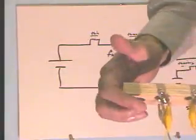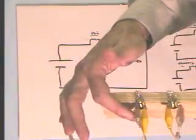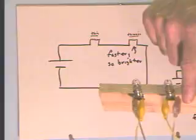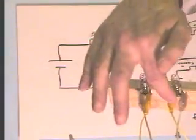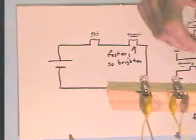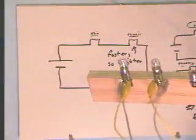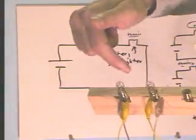Here we have the two leads from the generator, here and here, and we have this yellow jumper running from this tab to this tab so that the electrons have just one path to follow through the circuit.